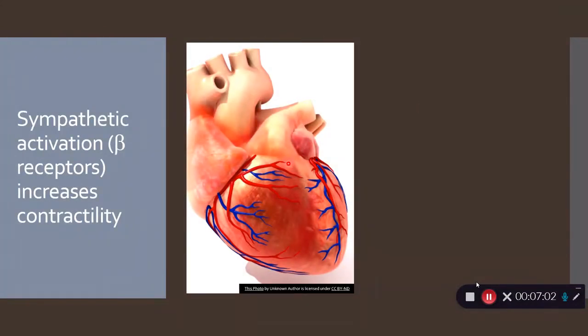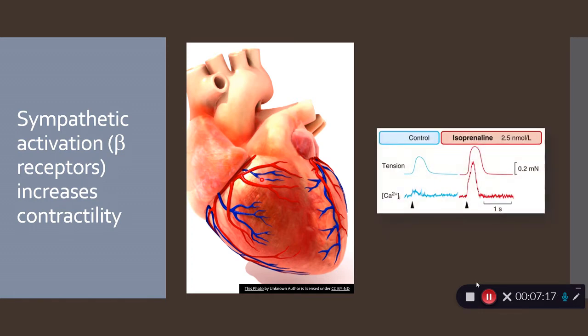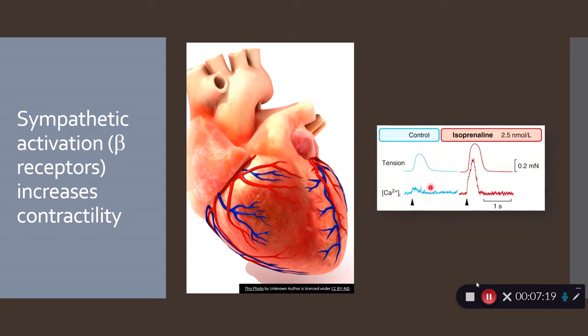If we focus on the sympathetic nervous system, remember that there are beta receptors on the heart which respond to the release of adrenaline and that increases the contractility of the heart. You can see this experimentally. Here's a control situation before you add any drugs. You can measure the tension in the heart muscle, and you can also measure the level of intracellular calcium.